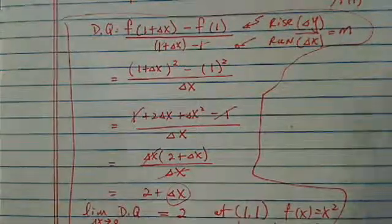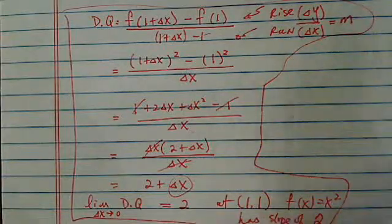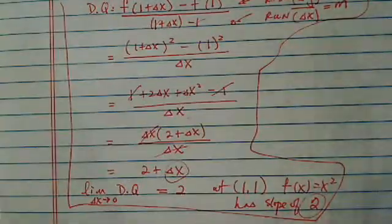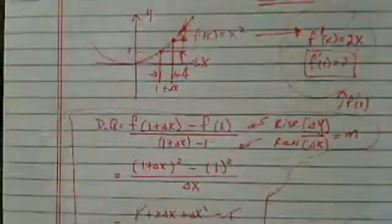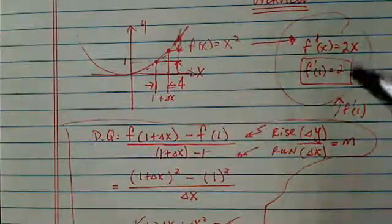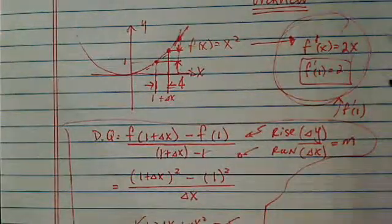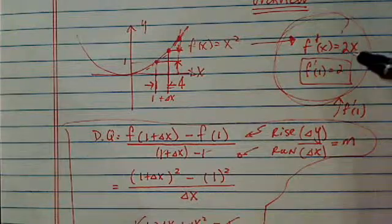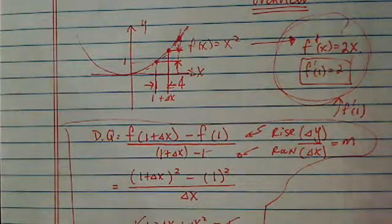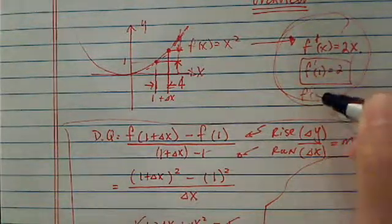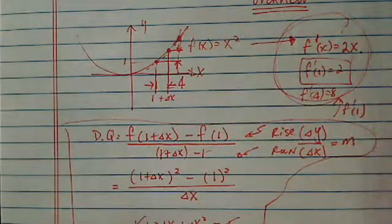The slope when x equal to 4 would be different than when x equal to 1. I have to go through exactly the same process all over again, and then I'll have a different slope. So later on, what we can do is developing this concept of first derivative, then at x equal to 4, I have a slope f prime of 4 equal to 8. Then I'm done again.